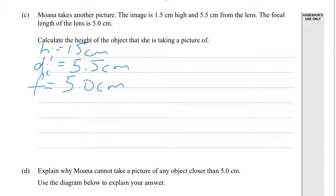Calculate the height of the object that she's taking a picture of. So to get the height of the object, we're going to need something that links the height of the image to the height of the object, which is your magnification formula. So magnification is the height of the image over the height of the object. We need to find the magnification somewhere.